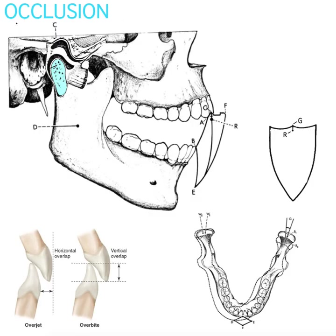The best definition for occlusion is the dynamic relationship between teeth as the mandible goes through its functional movement. A staple concept of occlusion is that the maxilla and maxillary teeth are not undergoing any motion whatsoever, because they're fixed to the skull. However, the mandible is able to go through functional movement because of the muscles of mastication and the temporomandibular joint, or TMJ.